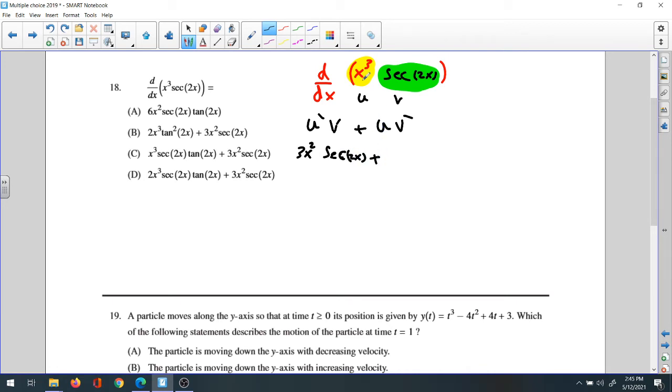Plus the first, which is x³, times the derivative of the second. The derivative of sec(2x): the derivative of secant itself is secant tangent, but we have to go inside and find the derivative of 2x, which is 2. That's the chain rule. So you're going to drop the 2 in the front: 2sec(2x)tan(2x).